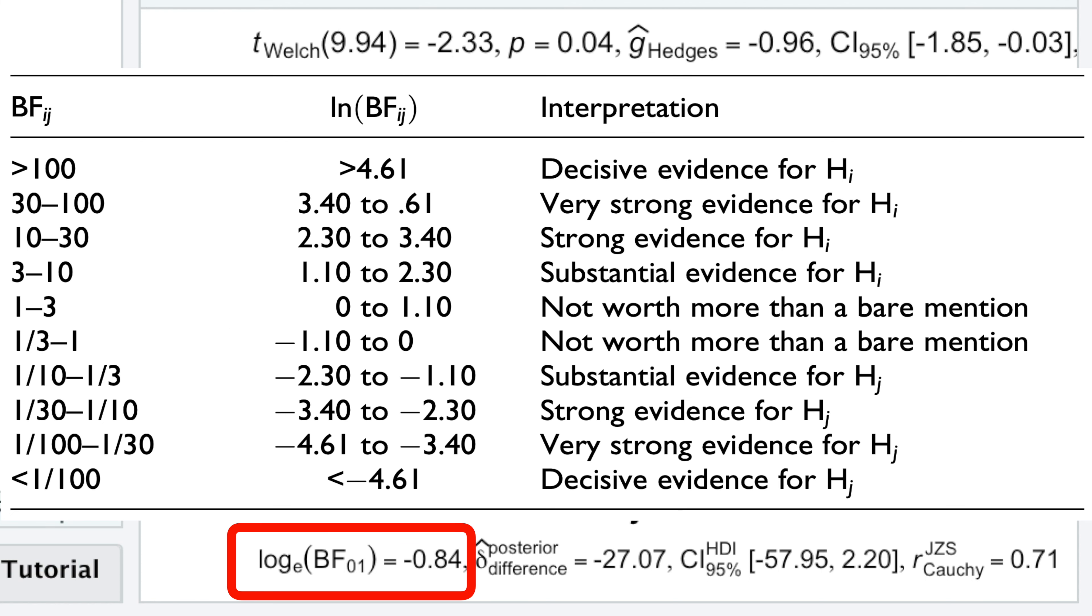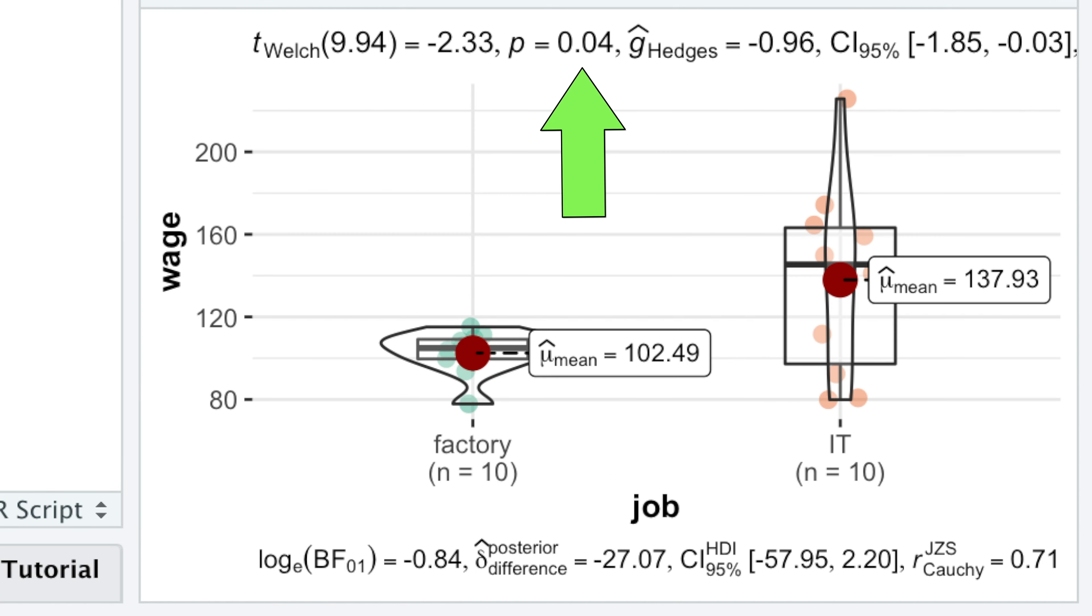Our Bayes factor, which is conceptually similar to the p-value, is kind of small. A Bayes factor of minus 0.84 indicates that the difference is not worth more than the bare mention, which is similar to moderate evidence against the null hypothesis found by the frequentist statistics on the top of the plot.